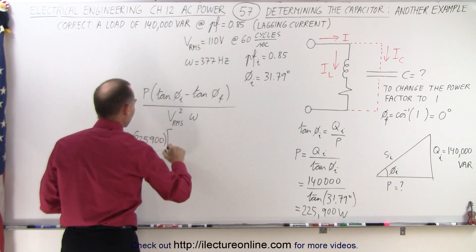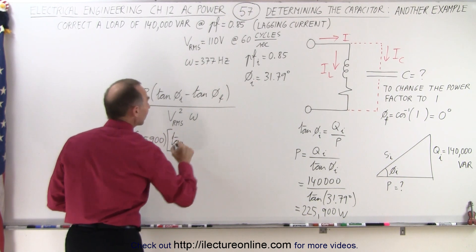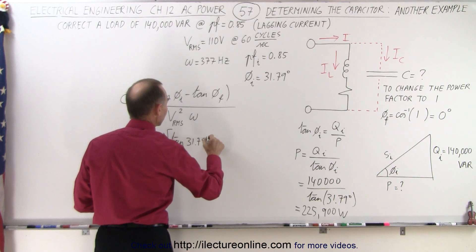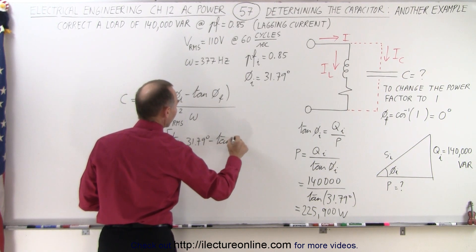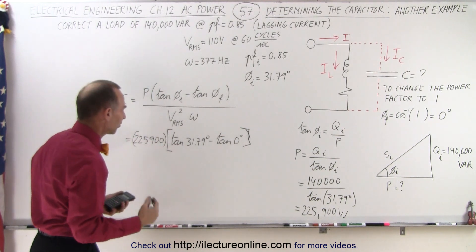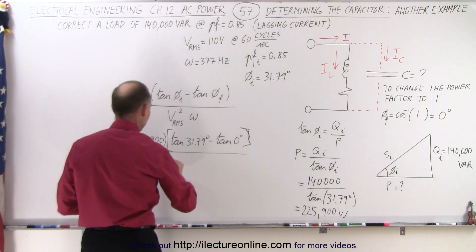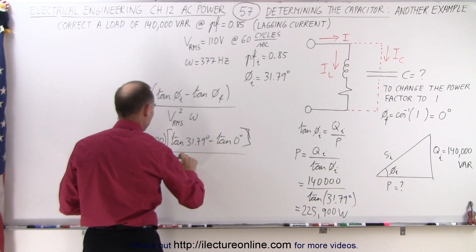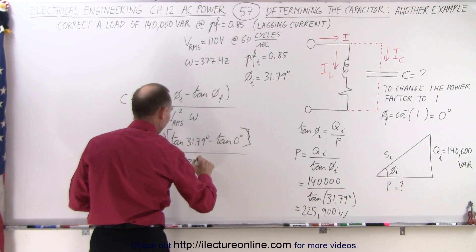Multiply that times the tangent of the original angle, which is 31.79 degrees, minus the tangent of 0 degrees. Of course, the tangent of 0 would be 0, divided by VRMS squared, 110 squared, times omega, which is 377.